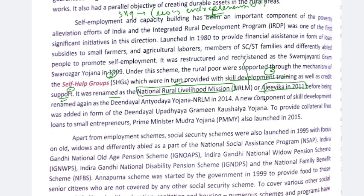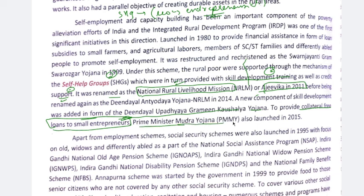A new skill development component was added in the form of Deen Dayal Upadhyaya Grameen Kaushalya Yojana, providing collateral-free loans to small entrepreneurs who had no security. The Pradhan Mantri Mudra Yojana was also launched in 2015 for similar purposes.